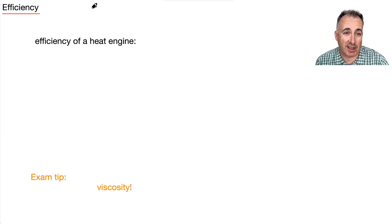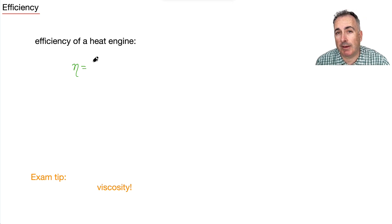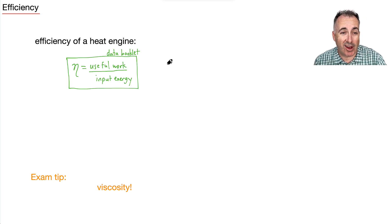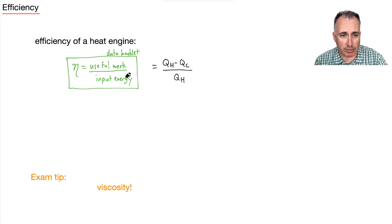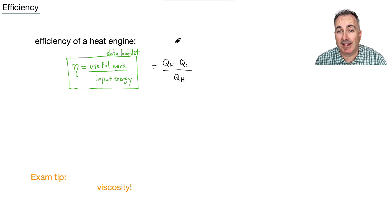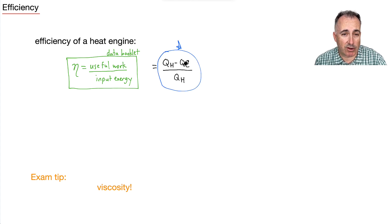We have an equation for the efficiency of any heat engine in general. We use this Greek symbol to denote efficiency — it's the useful work divided by the input energy. A more useful version, though it's not on your data booklet, is: efficiency equals QH minus QC, all divided by QH. So it's input minus output divided by input — that's how I like to think of it. Make sure you know how to use this version.